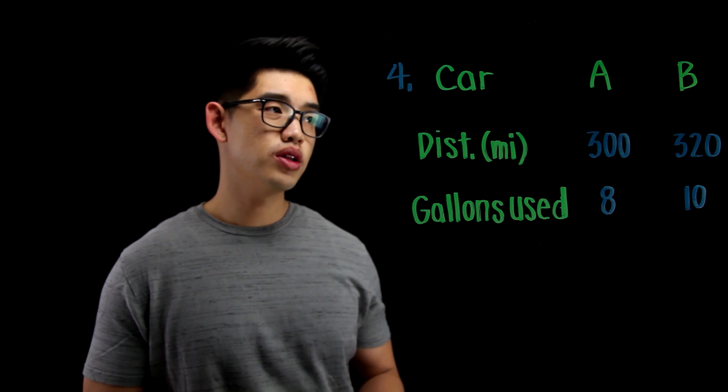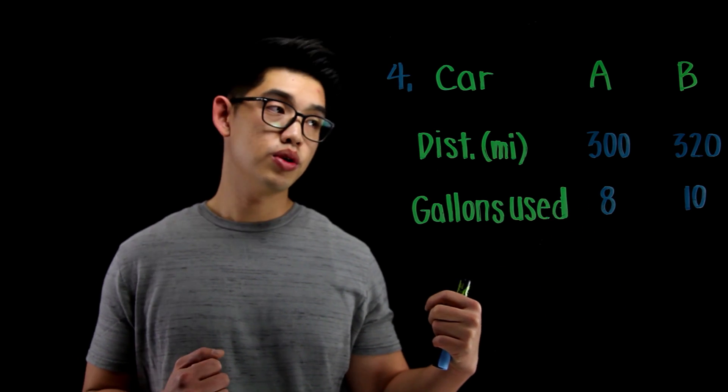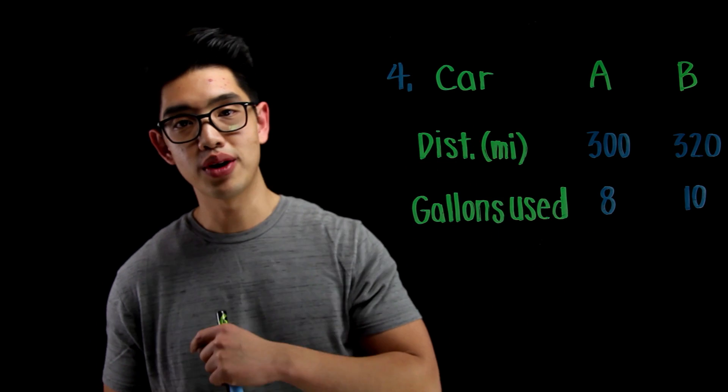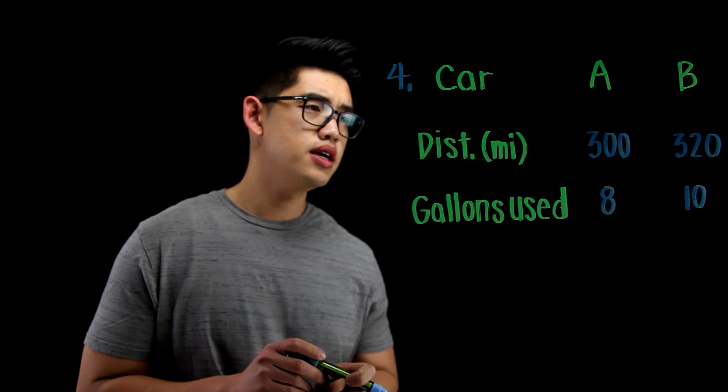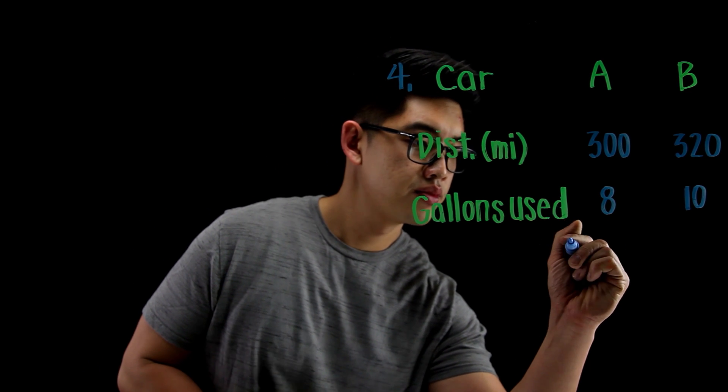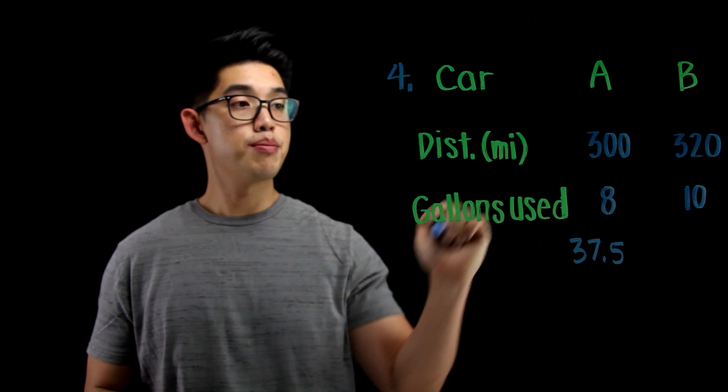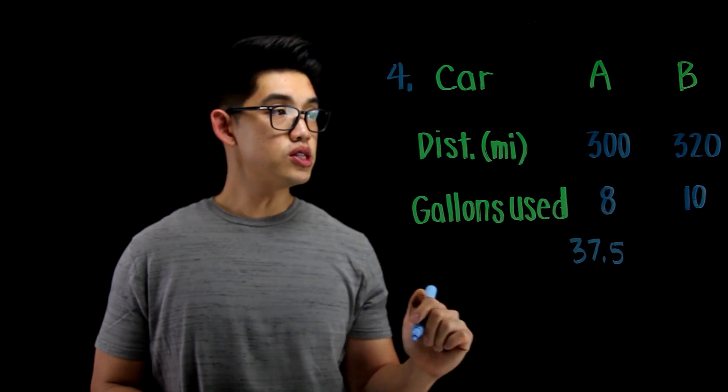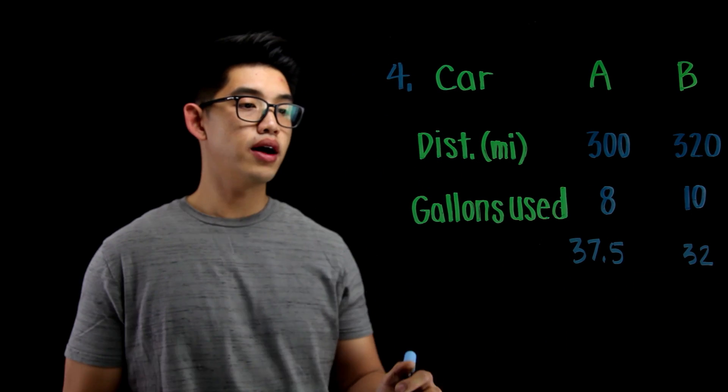For this one, we got to do a little bit of division and try to find the unit rate for both. And then, compare both unit rates to see which one has the better gas mileage. Let me see. 300 divided by 8. That's going to be 37.5 miles per gallon. And for this one right here, 320 divided by 10, that's just going to be 32 miles per one gallon.